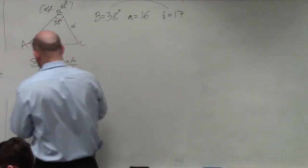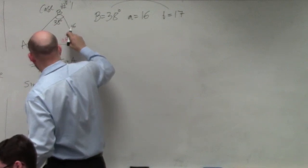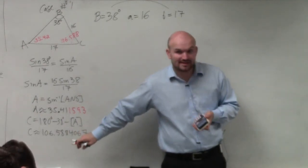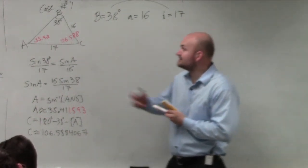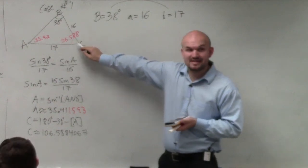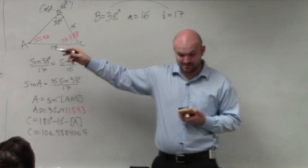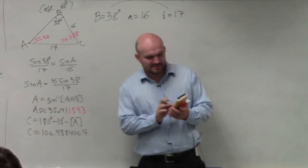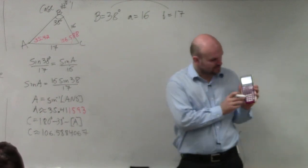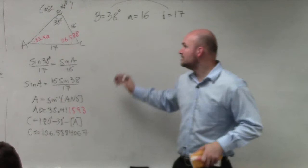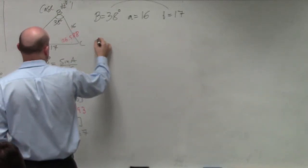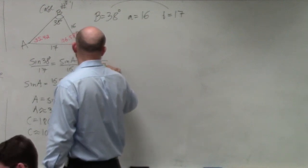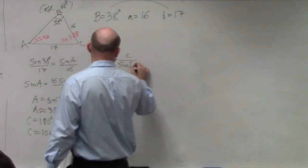I want to round that, but I still need to use the full value in my next calculation to find side length c. If I use the rounded angle I could introduce error — we don't use rounded answers; we need the whole answer. So either retype that whole number, or store it: hit store, alpha C. I'll show you on the computer so you can reference it. Now, to find side c, I'm going to flip the ratios — whatever I'm solving for goes in the numerator. So: 17 over sine of 38 equals c over the sine of stored C.